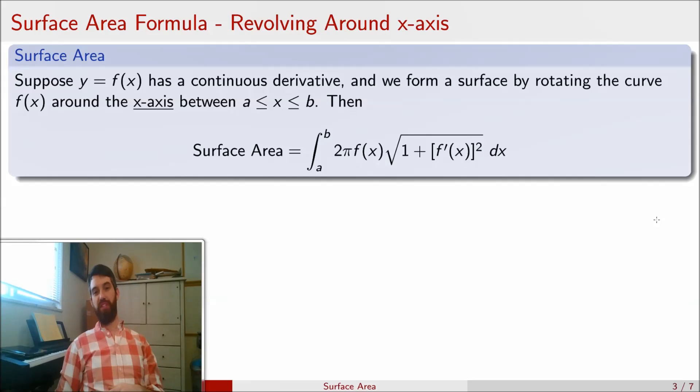Namely, if I have a function which is sufficiently nice, and I'm only interested in the region between some a and some b, then the surface area formed by revolving that curve around the x-axis is given by this formula. The 2πf(x), which I think of as the circumference with radius f of x, and then multiplied by this little arc length, the square root of 1 plus the derivative of f squared.